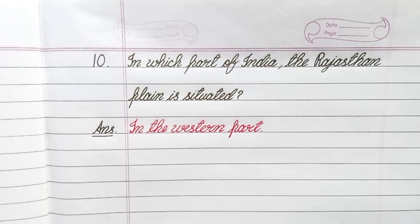Question number 10: In which part of India is the Rajasthan plain situated? Answer: In the western part.